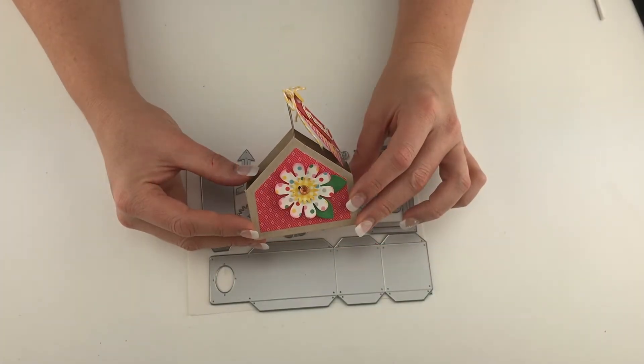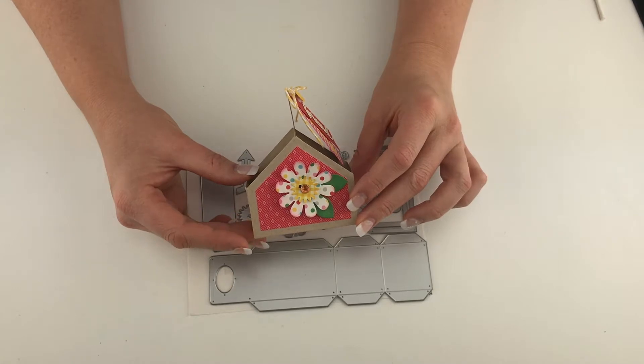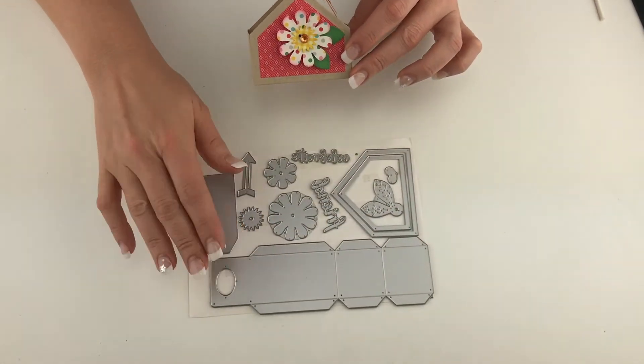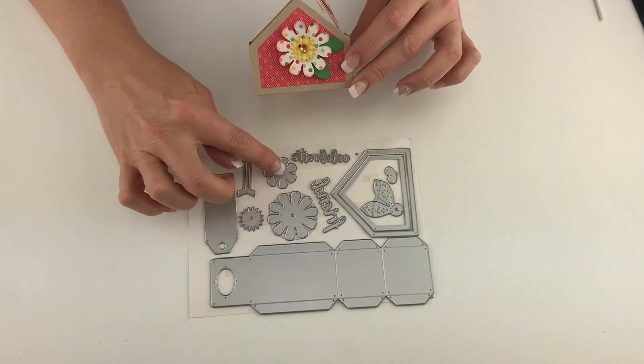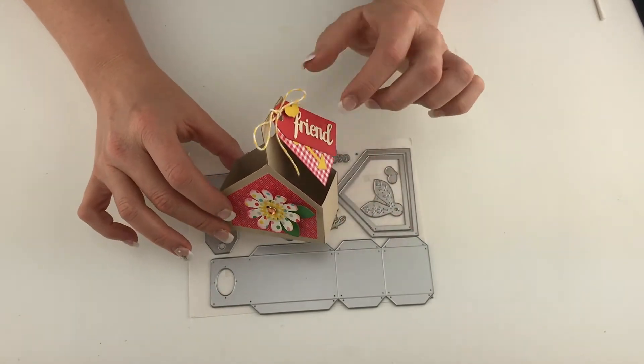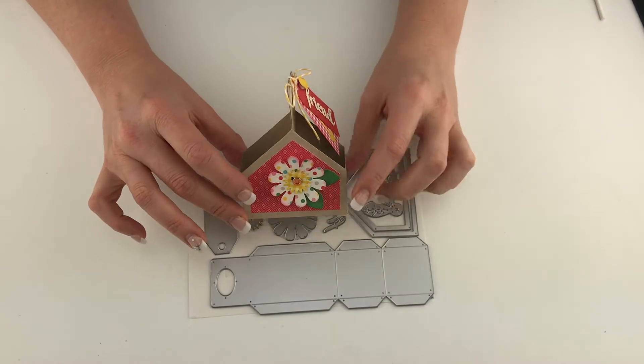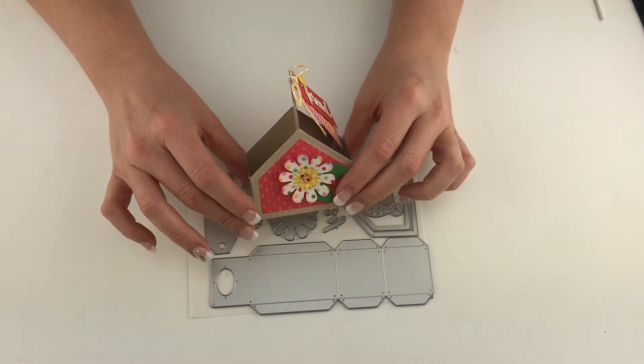Hi everyone, I'm Lori Whitlock and I'm here to show you how to assemble my double tote that I've designed for Sizzix. As you can see, it's a beautiful little thinlit set and it comes with all sorts of little embellishments. You can make a little tote that's perfect for holding nail polishes, little candies, or things like that.